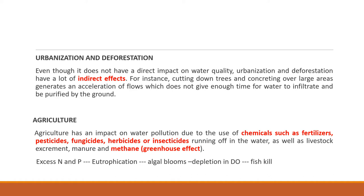Agriculture also contributes to water pollution. We use a lot of fertilizers, and chemical fertilizers emit a lot of nitrogen and phosphorus. This nitrogen and phosphorus can lead to eutrophication of lakes. Eutrophication is nothing but algal blooms — algae and other organisms present in water bodies use this nitrogen and phosphorus as extra nutrients and start blooming.